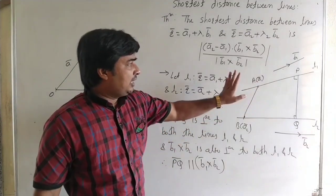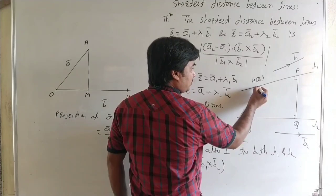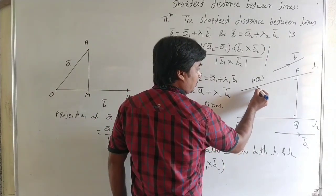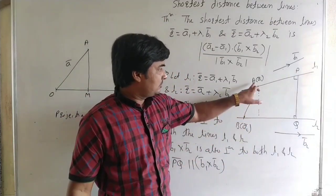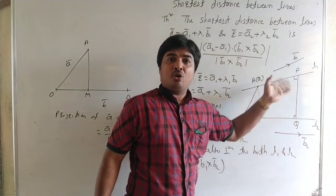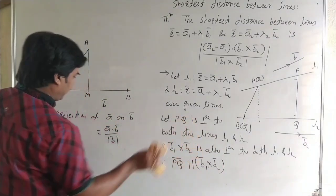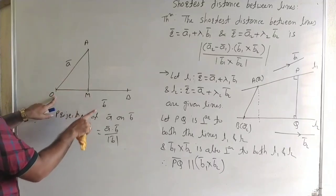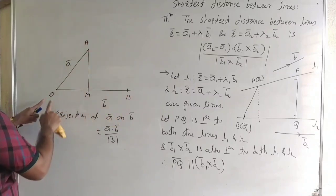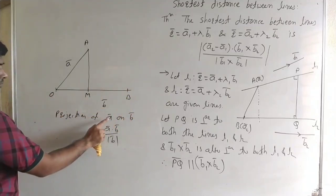P and Q are not given, but points A and B are given. We can find the perpendicular distance from A to B projected onto PQ. Since PQ is parallel to b̄₁ × b̄₂, the projection of AB onto vector PQ equals the projection of AB onto b̄₁ × b̄₂. OM is the projection of Ā on B̄, giving the perpendicular distance of point A from O on vector B̄.